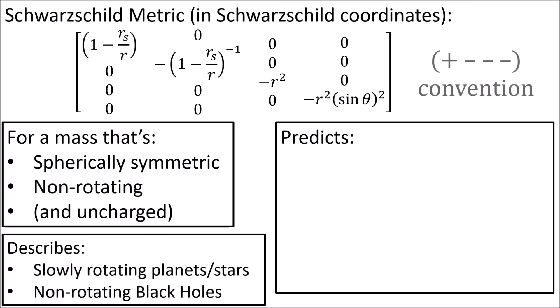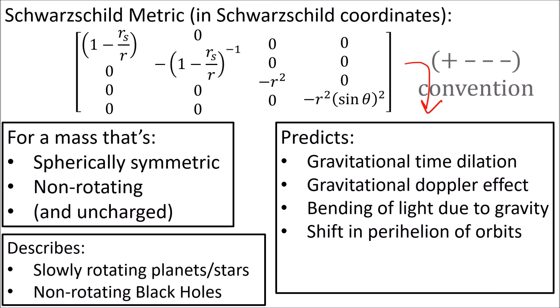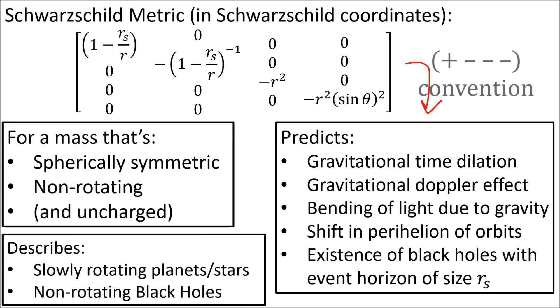The Schwarzschild metric predicts gravitational time dilation, the gravitational Doppler effect, the bending of light due to gravity, shifting in the perihelion of orbits, and the existence of black holes with an event horizon with a radius of rs, which is also called the Schwarzschild radius.